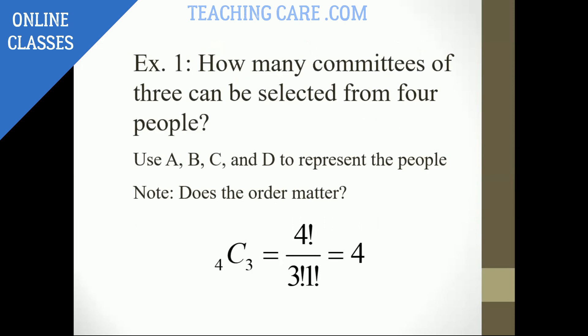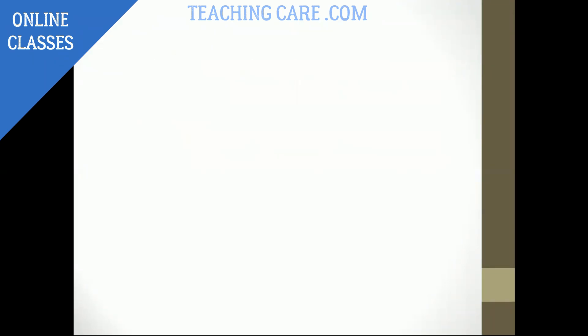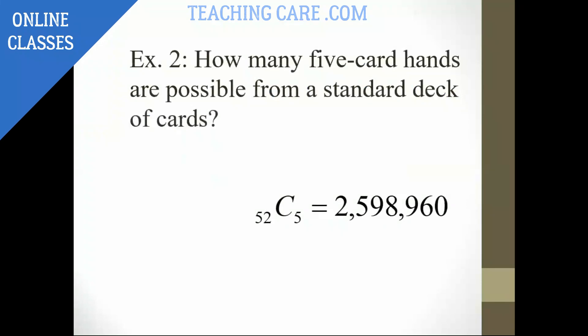How many committees of three people can be selected from four? So here, order is not important. Like any people, you can keep in any order. So it is 4C3. Next one, how many five card hands are possible from a standard deck of cards? Again, it comes as a combination. There is no order as a point.